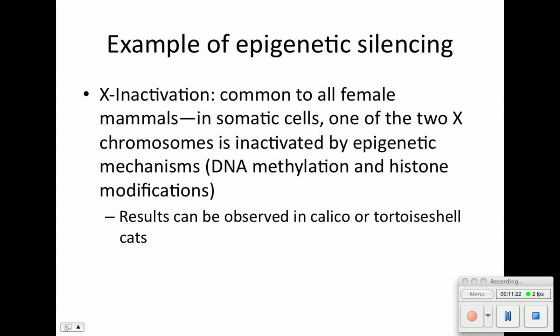Here's an example of epigenetic silencing: X inactivation. Females are XX, and one of the Xs gets inactivated through epigenetic mechanisms — through DNA methylation and histone modifications. This is how one of the female X chromosomes gets shut off.